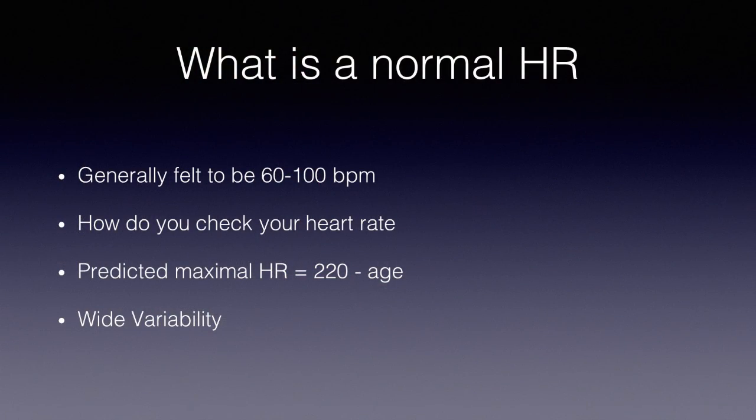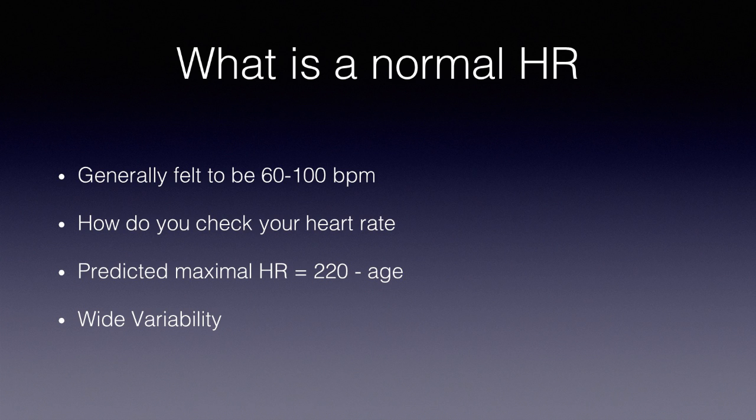A normal heart rate is generally 60 to 100 beats per minute. Many patients have resting heart rates in the 50s and that's fine too. To check your heart rate, take your pulse on your wrist at the radial artery, or at your carotid artery — but don't hold both carotids at the same time. You can also feel it in front of your earlobe. Count for a full minute, or count for 15 seconds and multiply by four.